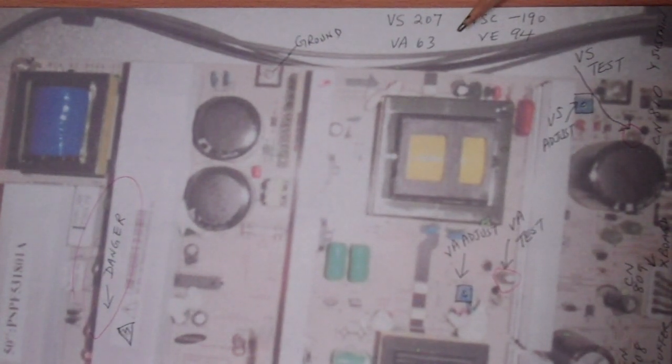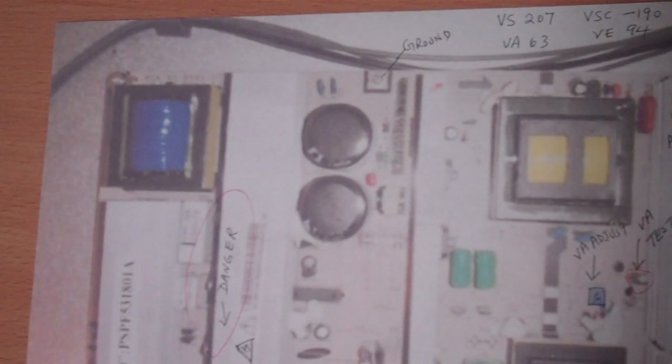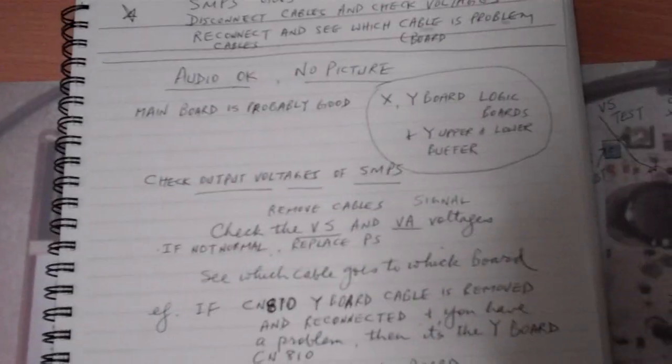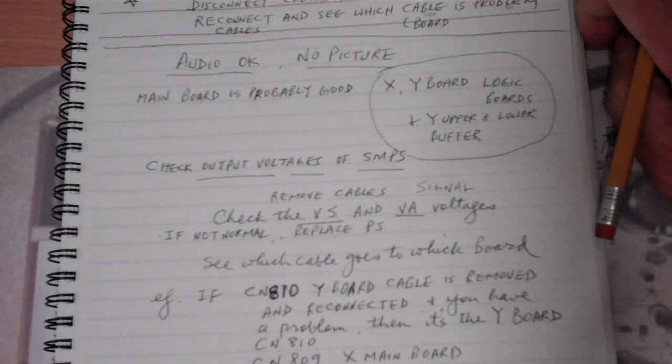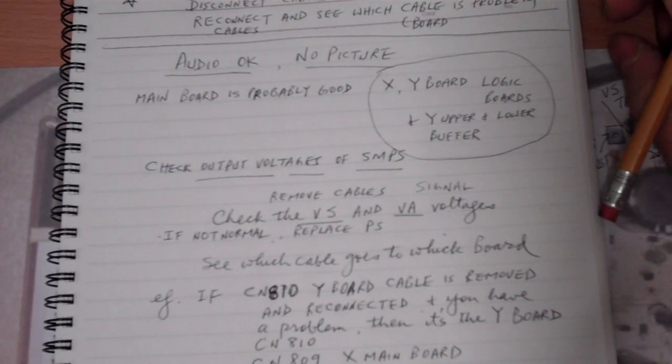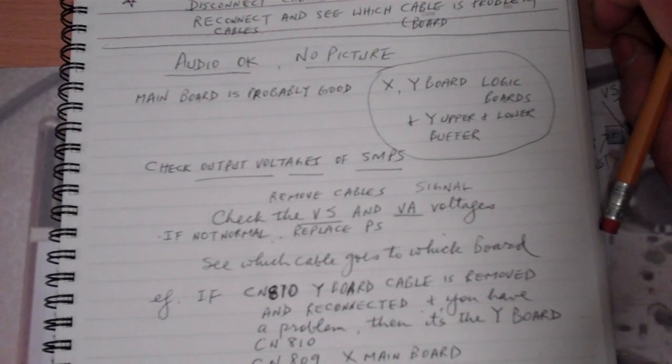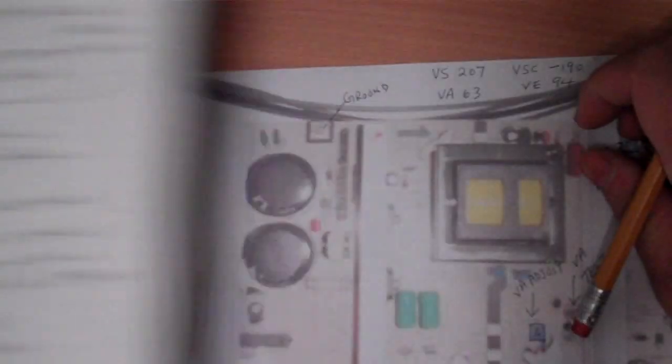So yeah, basically that's what it is. Power supply board, Y board - those are the two problems that you have when you can't even start your television. Nine out of ten times it's your power supply board, and most of the time it's your capacitors that are blown.